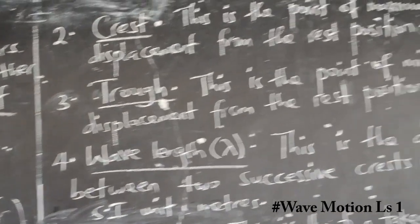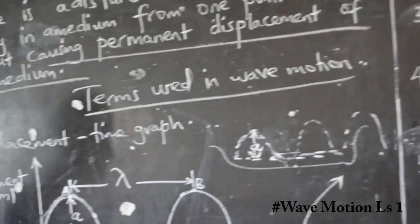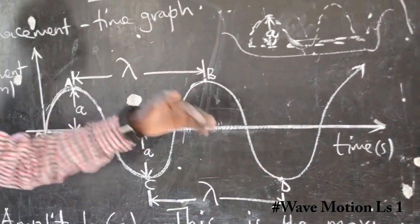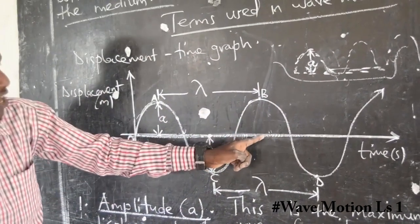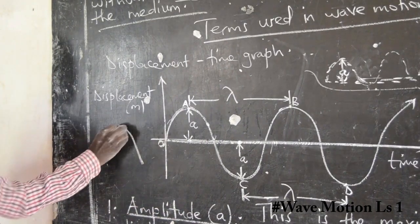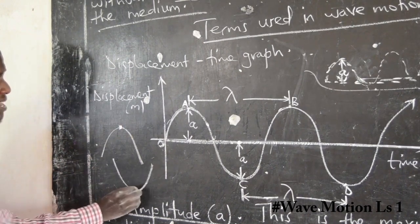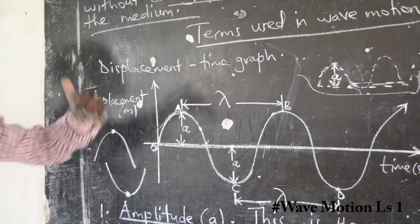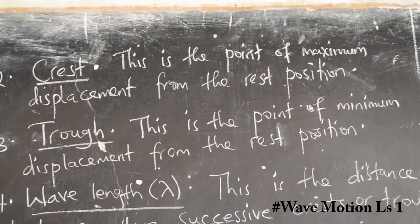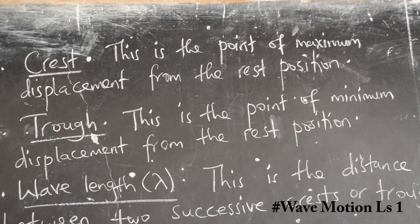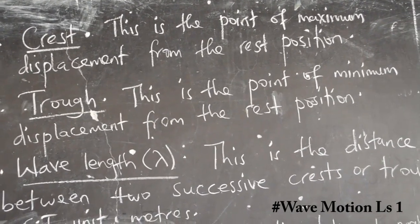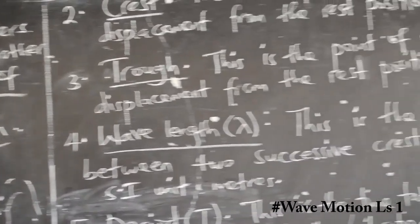Then we can go to what we call a trough. You can see points capital C and capital D on the diagram — these form a valley shape. These are the ones we call troughs. A trough is the point of minimum displacement from the rest or equilibrium position. So C and D are troughs, representing minimum displacement, while A and B are crests representing maximum displacement.